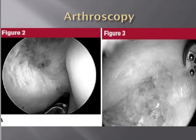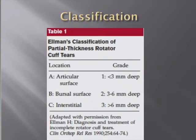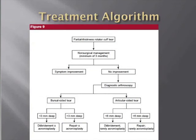There is a good classification system for partial thickness tears based on Ellman's classification, defining tears by location — articular, bursal, or interstitial — and by depth: less than 3mm, 3-6mm, and greater than 6mm. This classification is particularly pertinent because it does dictate prognosis and treatment.